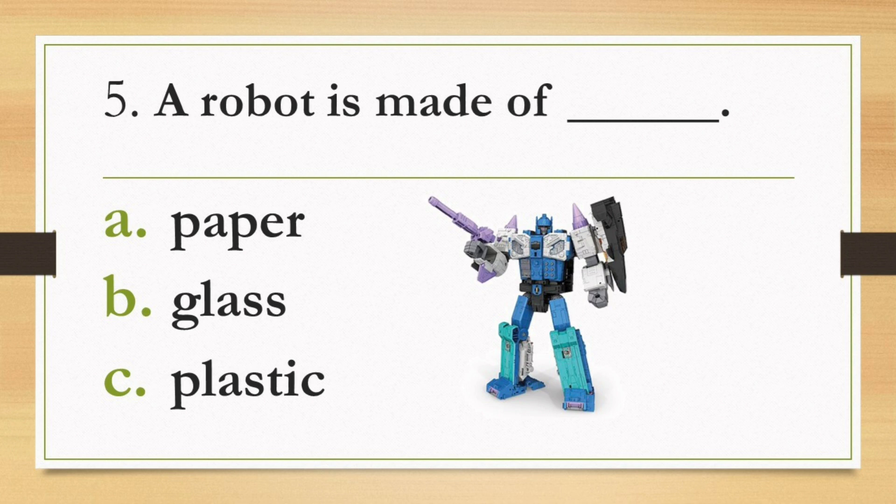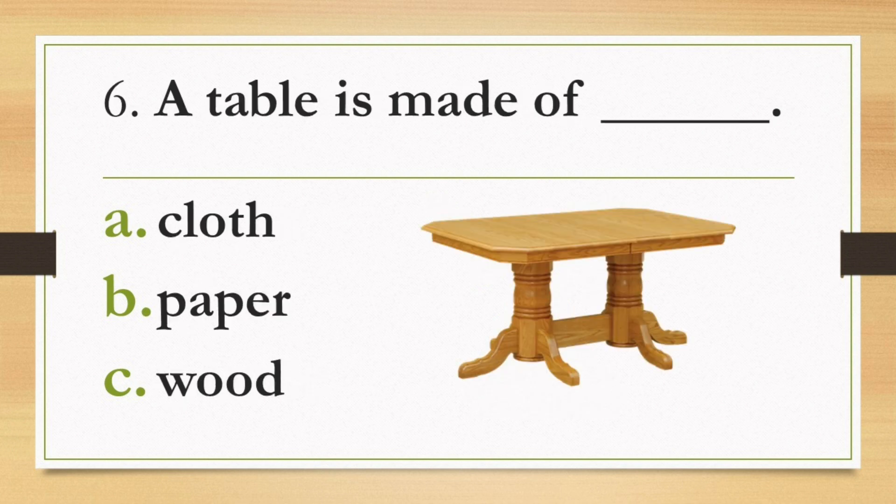Number 5: A robot is made of blank. A. Paper, B. Glass, C. Plastic. Number 6: A table is made of blank. A. Cloth, B. Paper, C. Wood. Are you finished?